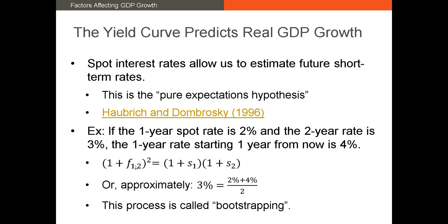The equation we use is: 1 plus the forward rate over the next two years squared equals 1 plus the spot rate this year times 1 plus the spot rate next year. So if we know the current rate on a 1-year T-bill is 2% and the forward rate on a two-year Treasury is 3%, we can back out the yield on a one-year Treasury starting one year from now. That 4% gives us an indication about the risk-free rate going forward.